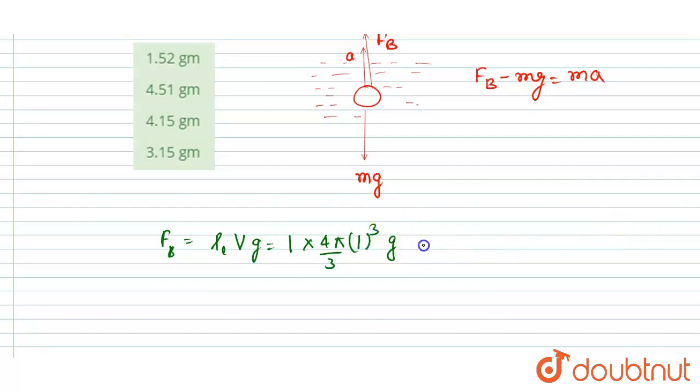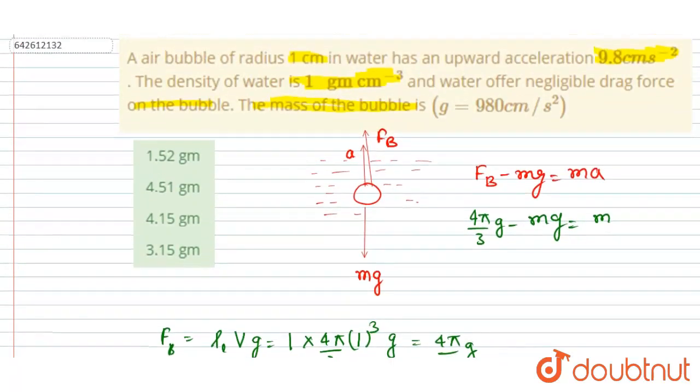So if you will calculate this, you will get 4π/3 g as the buoyant force. So just put this here: 4π/3 g minus mg equals mass times acceleration. Now if you see here, acceleration is already given in the question, it is this, right?